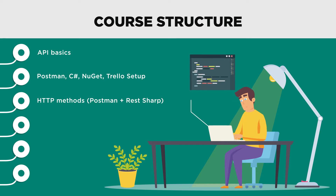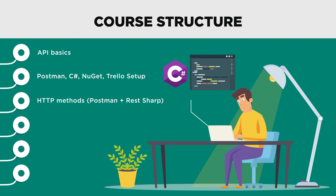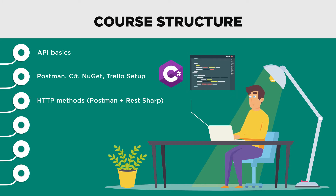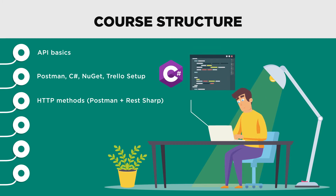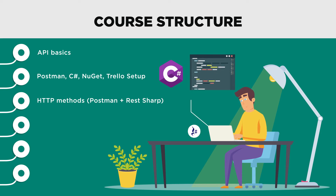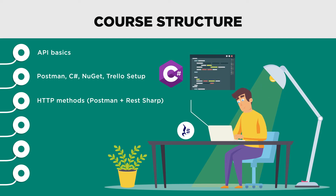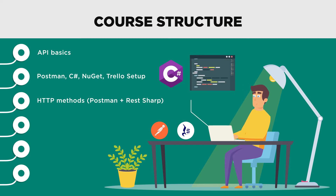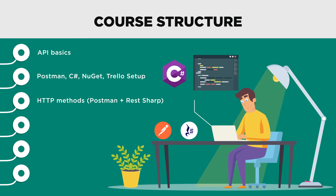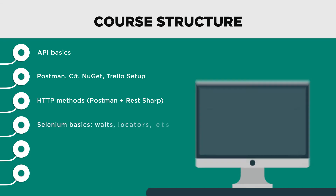The following step will be to set up our test development environment to start automated test creation in C#. You will get a detailed explanation of how to set up everything. Then we will learn how to build an API testing automation framework with the help of RestSharp. Here we will project all the knowledge from the API theory and Postman part into C# code.